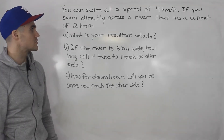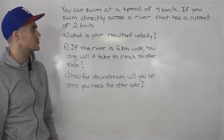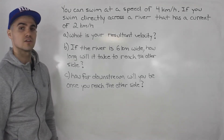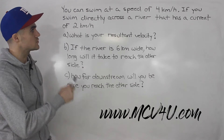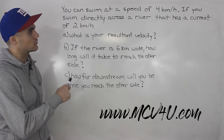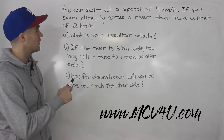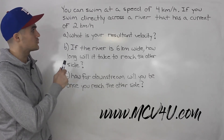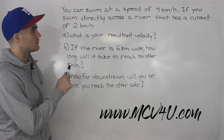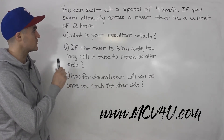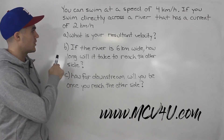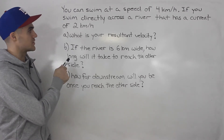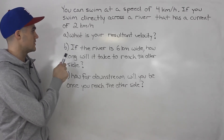Welcome back guys. Moving on to another question in the velocity section. You can swim at a speed of four kilometers per hour. If you swim directly across a river that has a current of two kilometers per hour, part A: what is your resultant velocity?